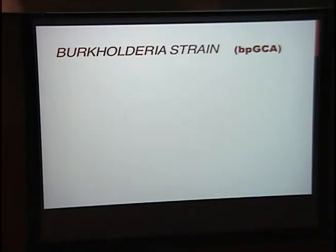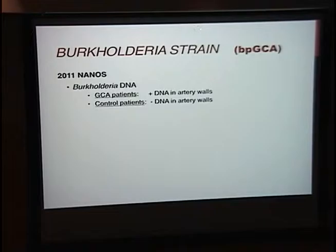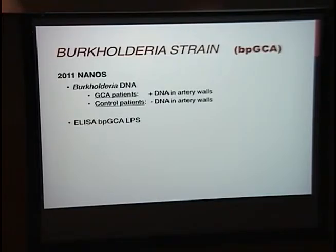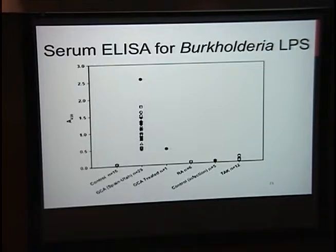There has been a strong association between giant cell arteritis and a strain of bacteria called Burkholderia. Burkholderia DNA has been found in the vessel walls of patients with giant cell arteritis compared to controls who don't have the DNA in their walls. An ELISA for this bacteria is found in patients with temporal arteritis and not in controls. Another graph shows that patients with giant cell arteritis have a much higher Burkholderia ELISA titer than controls.